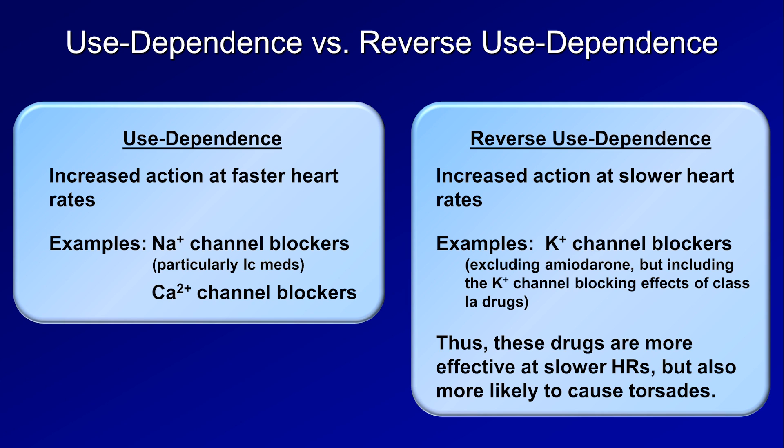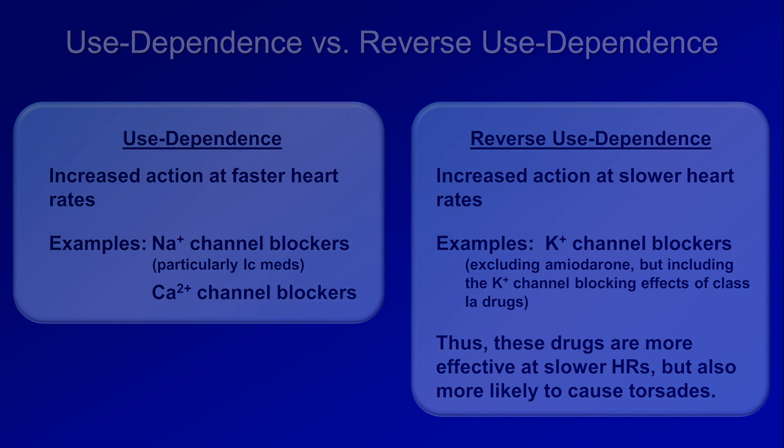For example, if a patient presented to the ER with recurrent episodes of torsade in the setting of sotalol toxicity, and IV magnesium was insufficient to control them, additional treatments that could be tried include temporary pacing or isoproterenol with a goal heart rate of about 100 beats per minute. That's all for the potassium channel blockers. The next video in the series will cover class IV drugs, the calcium channel blockers.